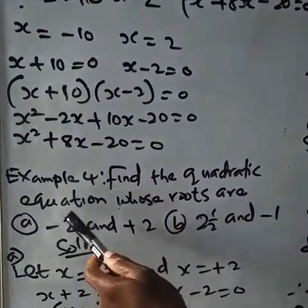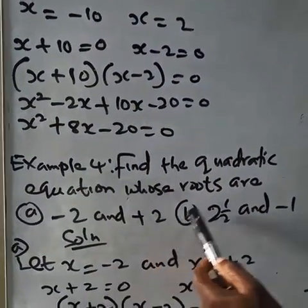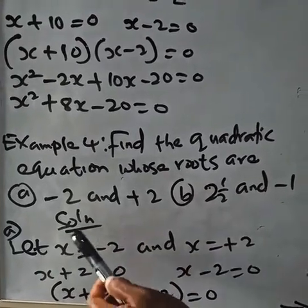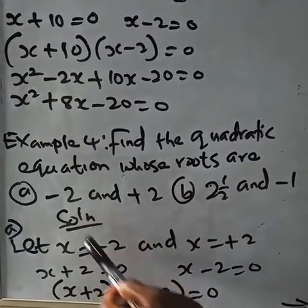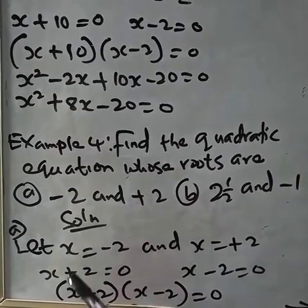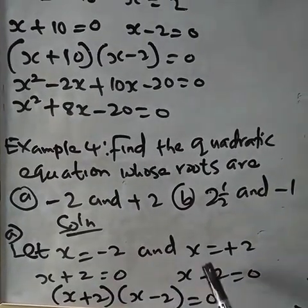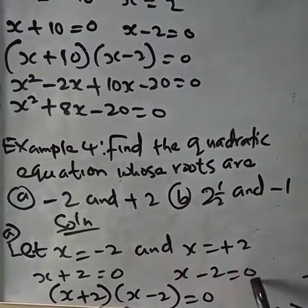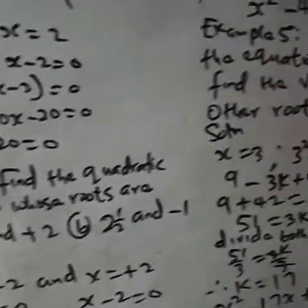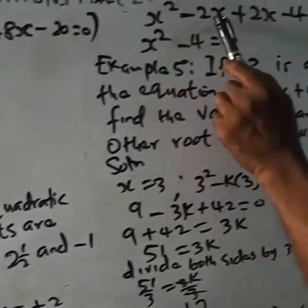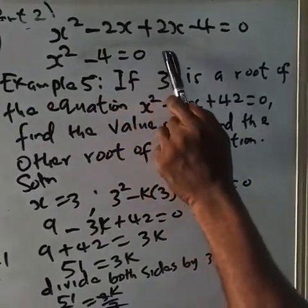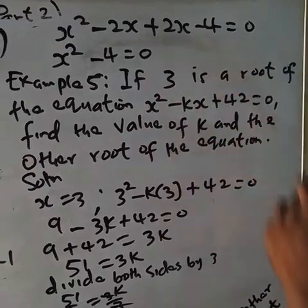Example 4: find the quadratic equation whose roots are minus 2 and plus 2. So x equals minus 2 gives x plus 2 equals zero, and x equals plus 2 gives x minus 2 equals zero. Multiplying the two factors together: (x + 2)(x − 2) = x squared minus 4. This is the quadratic equation.